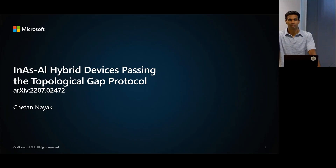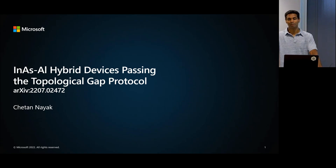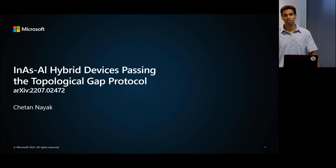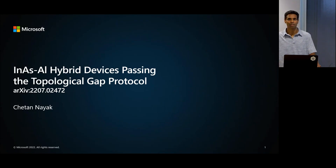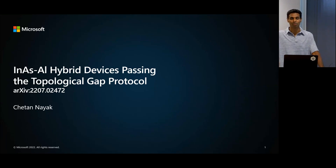Thank you everyone for joining us here today. The context for this talk is about a year, a little more than a year ago, the Microsoft team and collaborators put out a paper on what we call the topological gap protocol, which is a protocol designed to identify topological superconductivity in a nanowire. Then in this past March, at the Station Q meeting, we shared that we had a number of devices that had passed that protocol.